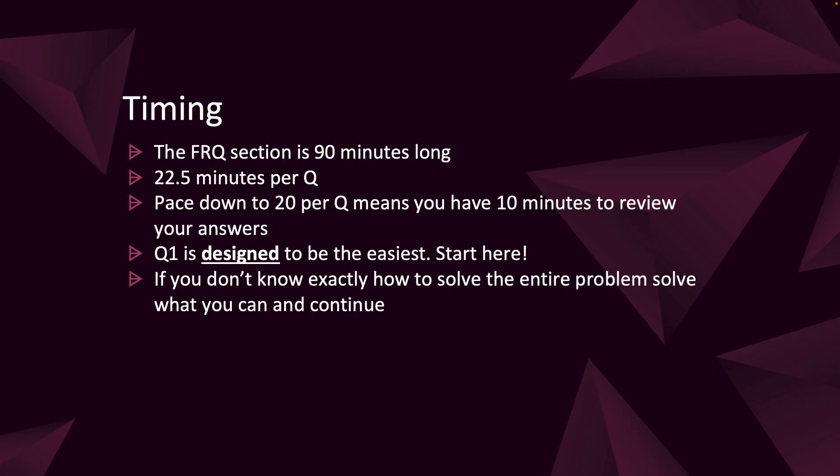For timing, the FRQ section is 90 minutes long, which is 22.5 minutes per question. You want to pace yourself down to 20 minutes per question, which gives you about 10 minutes at the end to review your answers. It's also very easy to keep track of on the clock. Q1 is designed to be the easiest, so start here. If you don't want to solve an entire question, solve what parts you can and move to the next one so you can come back and work on it later.